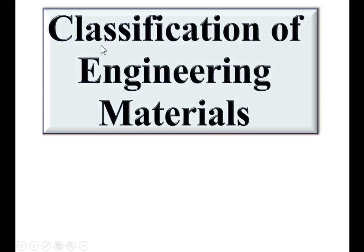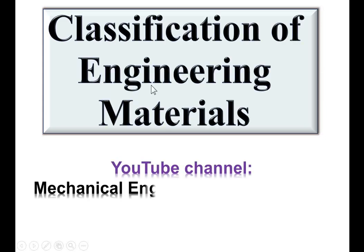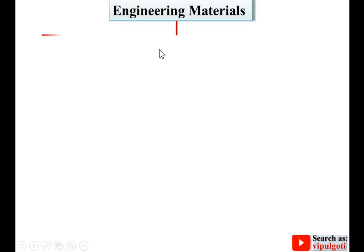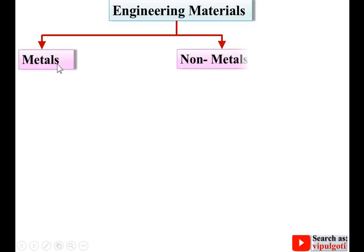Today we are going to discuss about the classification of engineering materials. First, we will discuss about the classification of engineering material with the help of a table. Basically, engineering material is classified into two broad categories: first, metals, and second, non-metals.